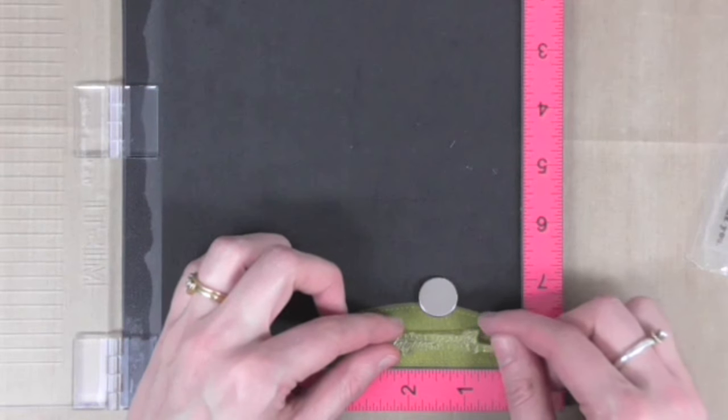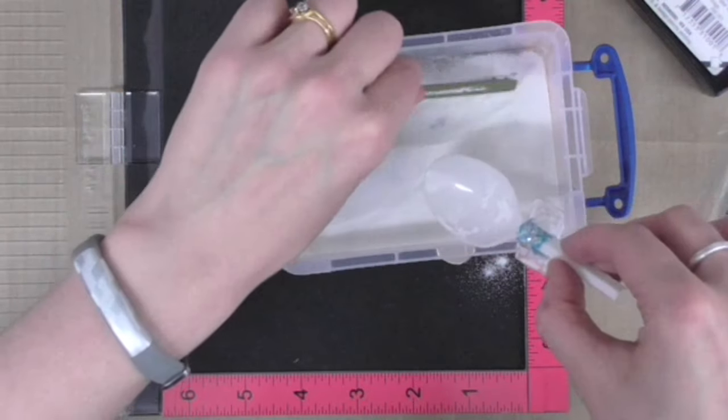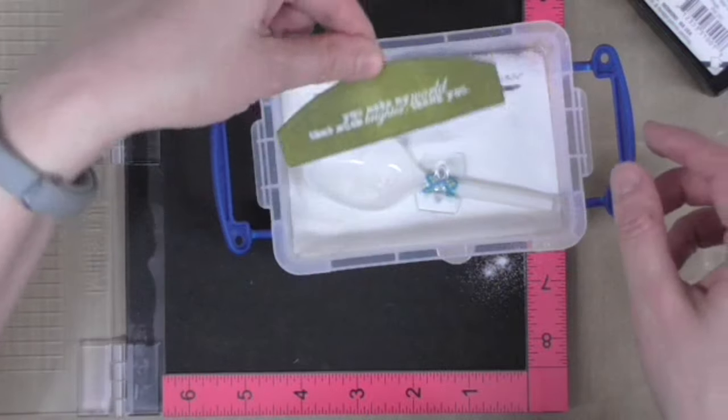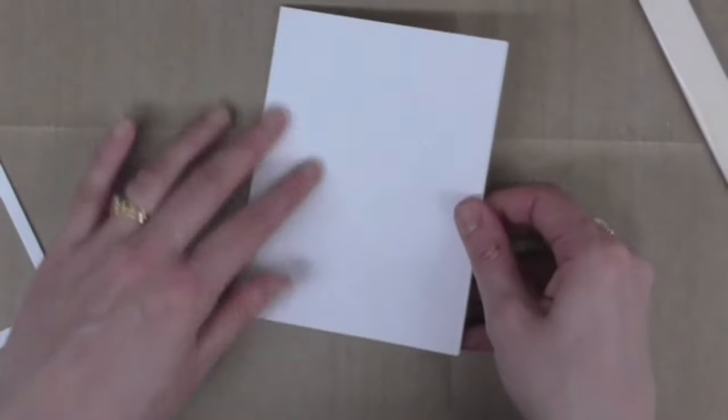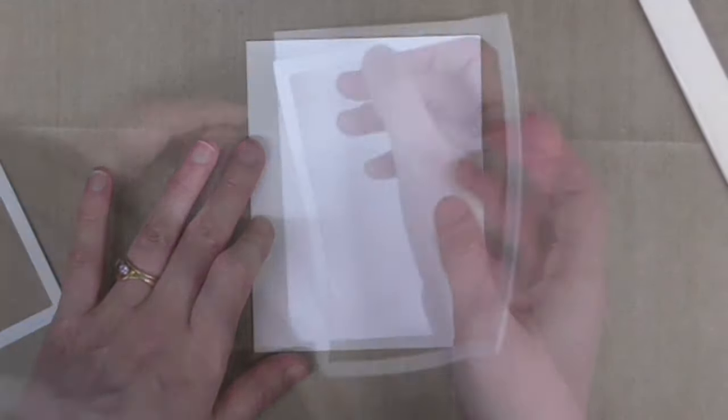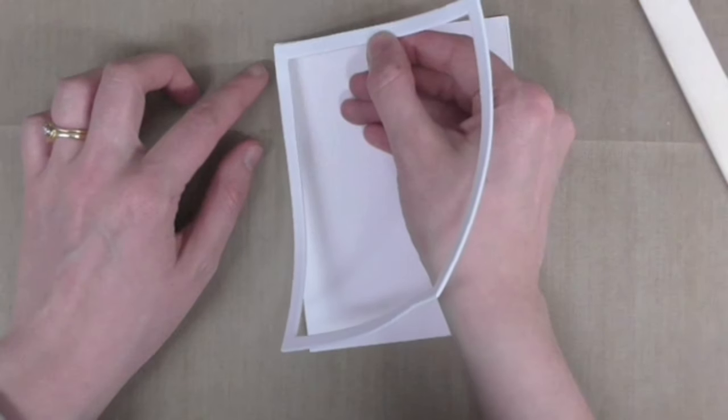Before I assemble the rest of the card, I'm going to stamp and emboss my greeting onto the hillside. Then I can take a side-folding note card and assemble the card.